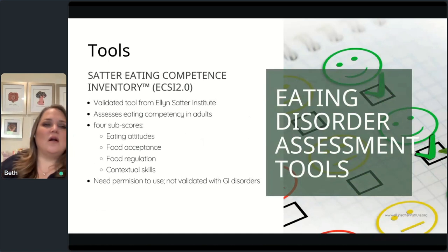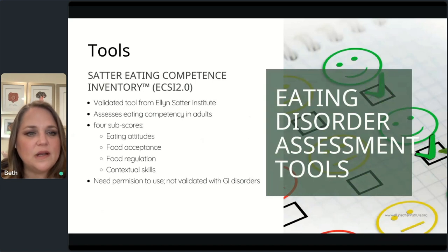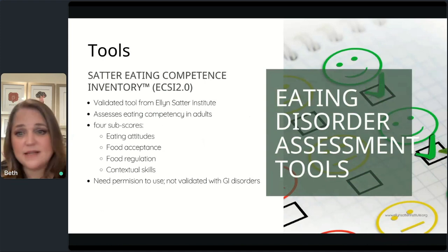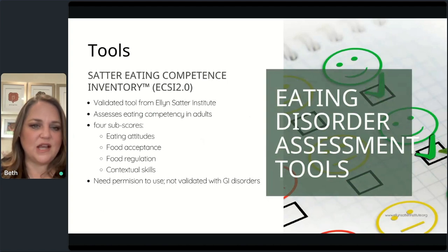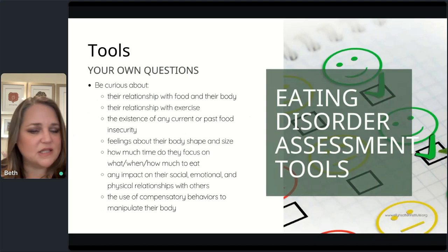Another tool is the Satter Eating Competence Inventory — a validated tool from Ellen Satter focusing on four subscores around competence versus maladaptive eating behaviors. I use this in my practice with everyone who walks through my door, and I've yet to find many folks who don't have some maladaptive eating, since most of my patients have GI issues, eating disorders, or both. If a tool feels clumsy, you can simply have a conversation with patients and be curious about their relationship with food, their body, and compensatory behaviors.